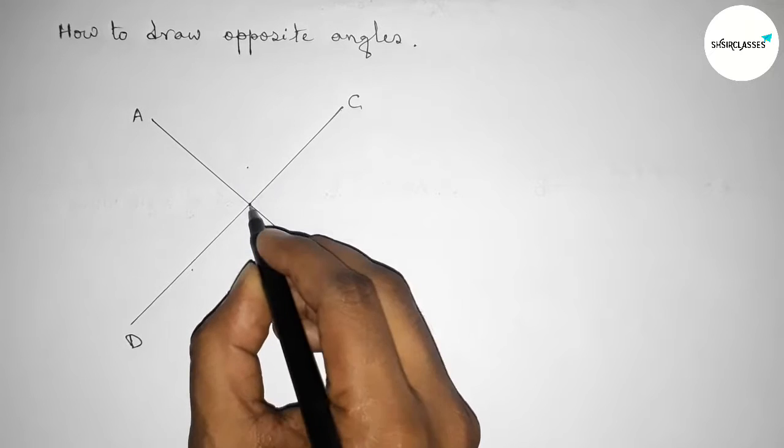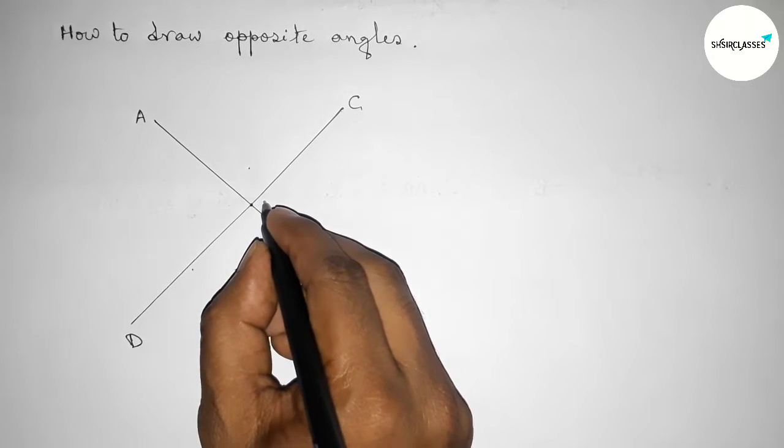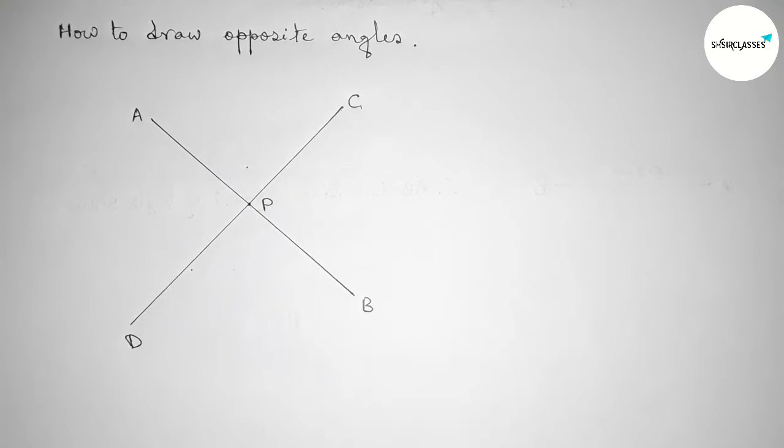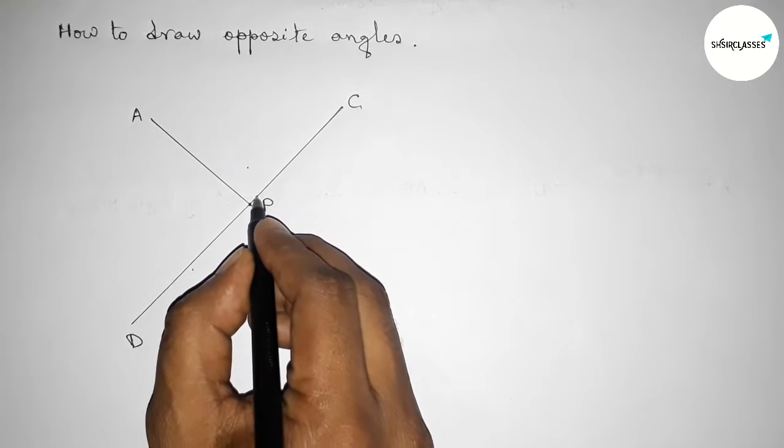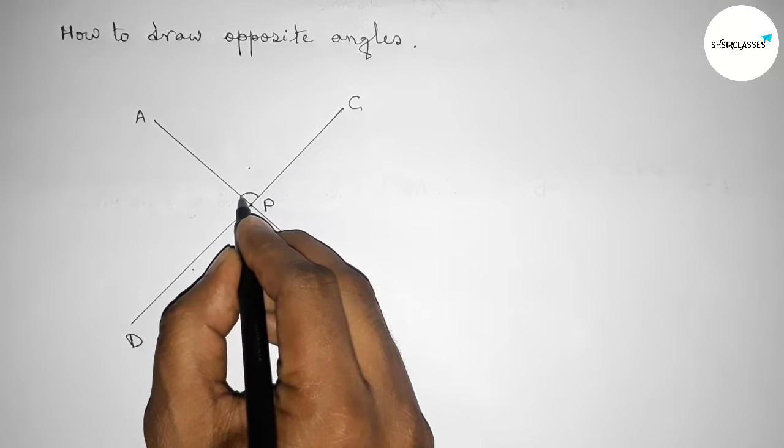Now talking here some important topics. So first, here this angle, so this angle and this angle are equal and opposite.